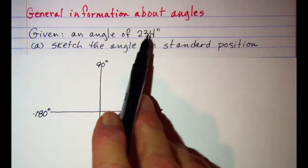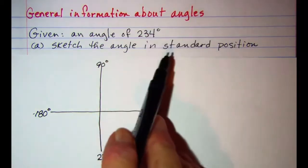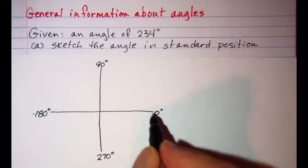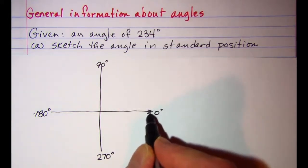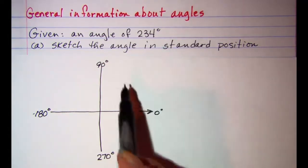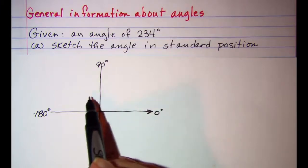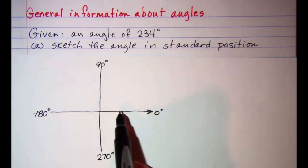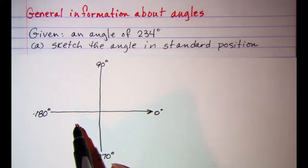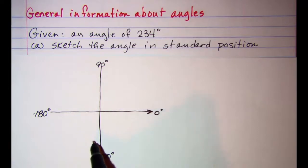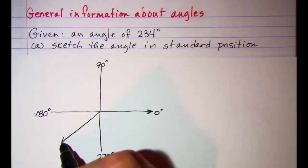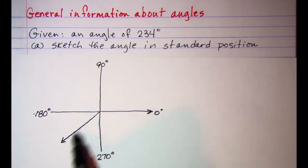For an angle of 234 degrees in standard position, it'll have its initial side on the positive x-axis. We begin at 0 and then rotate around our coordinate plane. We're going to go 234 degrees, which is more than 180 but less than 270, so our angle is going to have a terminal side in this quadrant.